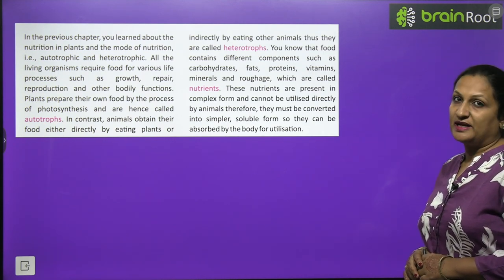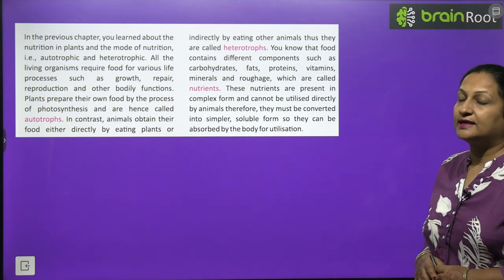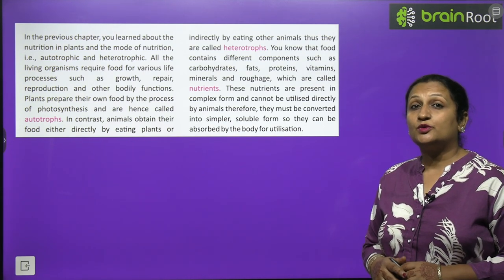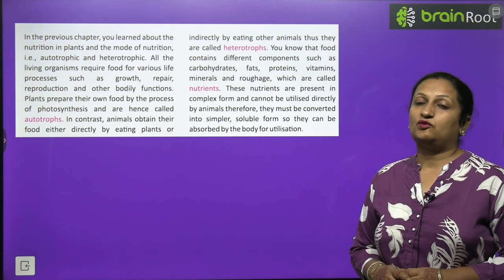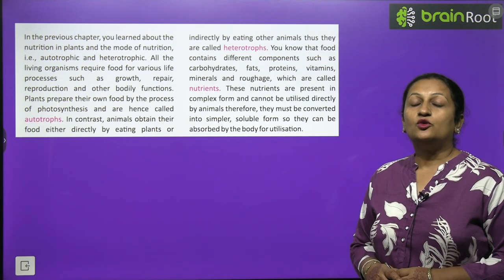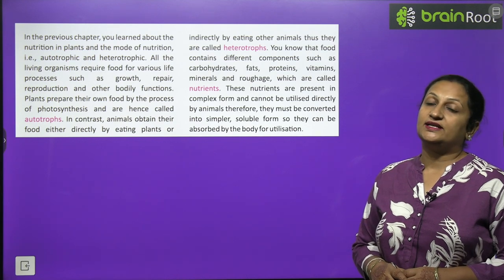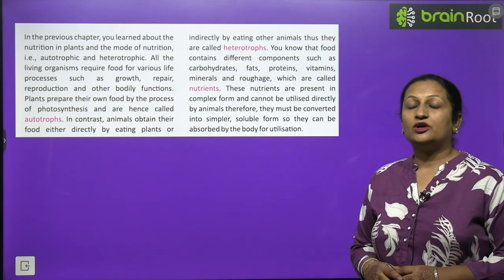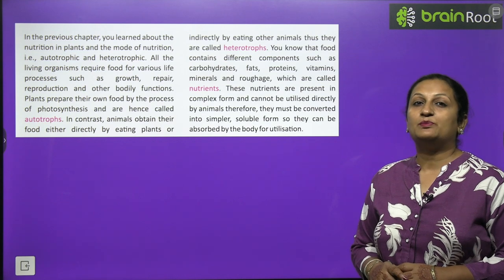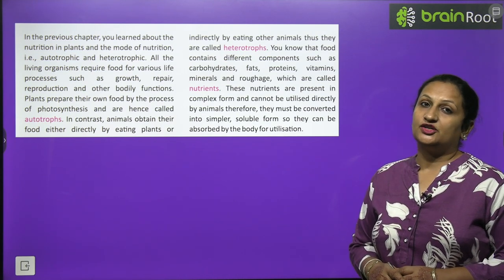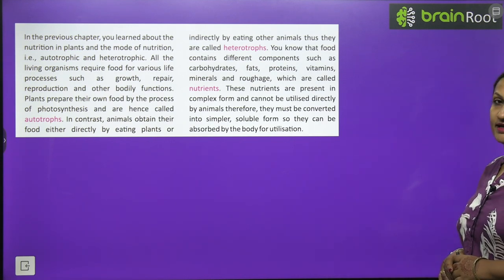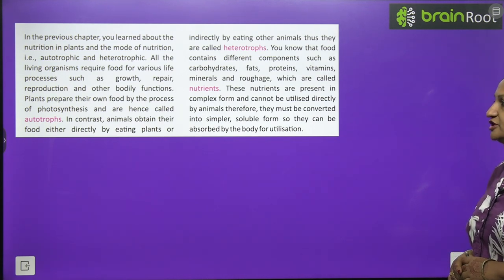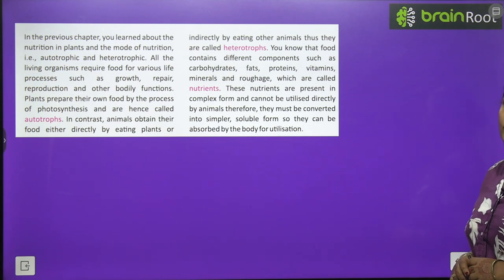These nutrients are present in complex form. The food we eat contains carbohydrates, proteins and fats in complex form, and our body cannot utilize them as such to release energy. So the body has to break down this complex material into simple substances, only then can energy be released. Therefore, nutrients must be converted into simpler, soluble form so that they can be absorbed by the body for utilization.